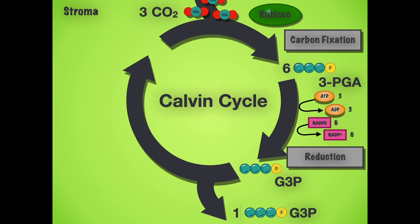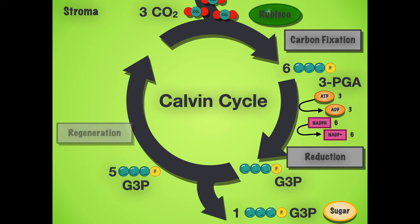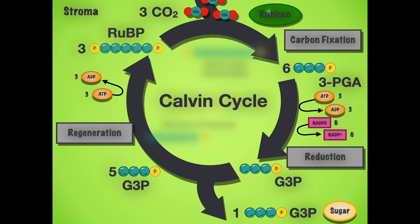One G3P is pulled out to eventually become glucose — C6H12O6. Five G3P go back into the Calvin cycle to keep it functioning. This regeneration phase requires three ATP, and at the end we get ribulose bisphosphate, which continues the cycle. There are also short-lived intermediates you may study in more detail in a biochemistry course.